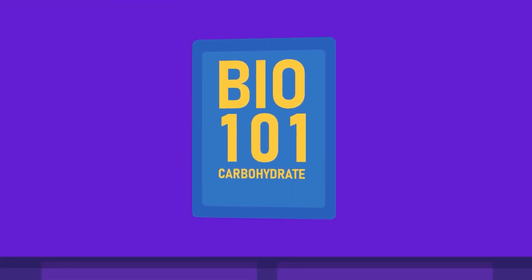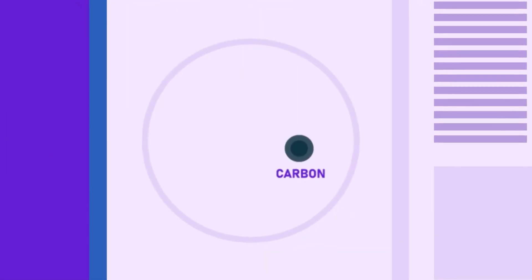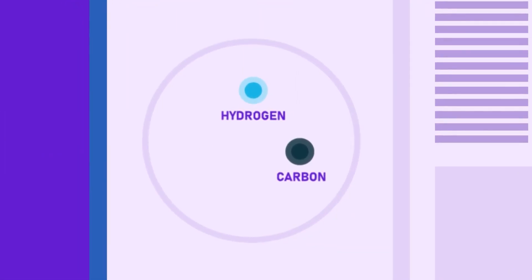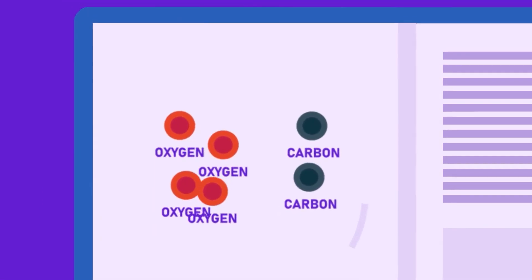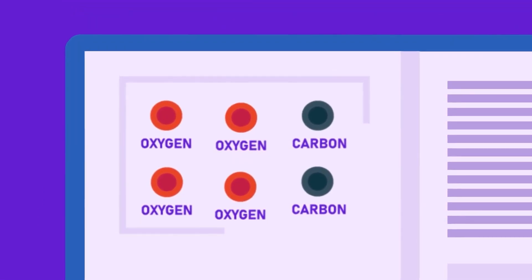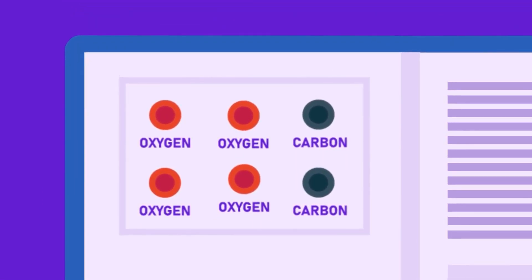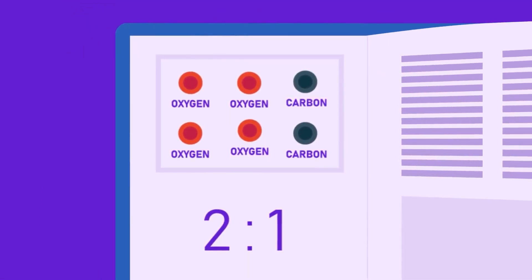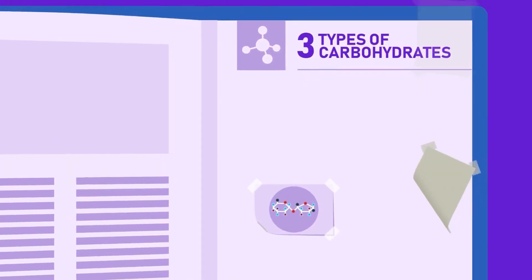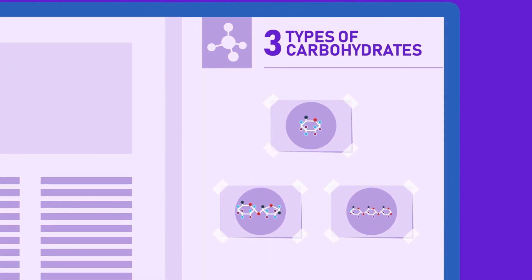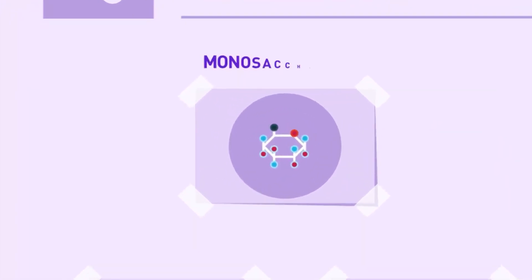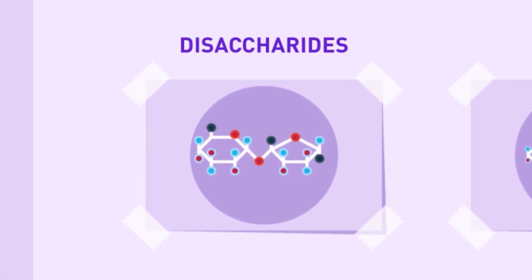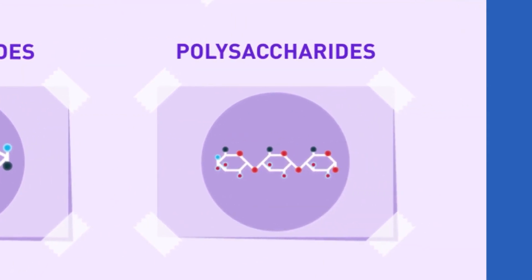Carbohydrates are organic compounds made up of carbon, hydrogen and oxygen. The hydrogen and oxygen atoms are present in the same ratio, that is, 2 to 1. There are three main types of carbohydrates: monosaccharides, disaccharides and polysaccharides.